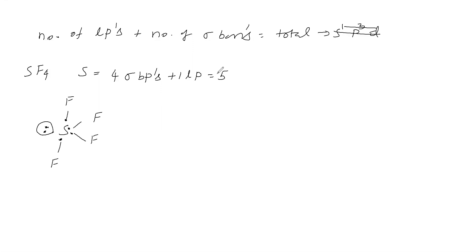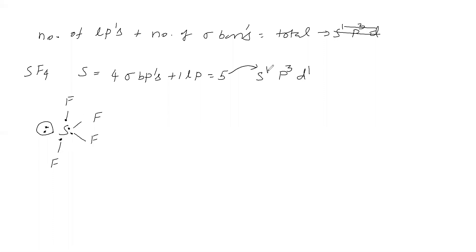So how to say the hybridization of sulfur: we write SPD. Out of five, first give one to S. Remaining four — give maximum three to P. Remaining one after distributing to S and P means one goes to D. So the hybridization is sp³d for sulfur in SF₄.